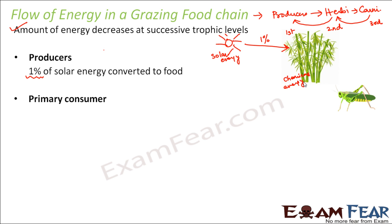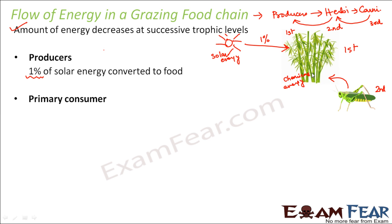Now comes the second trophic level — the herbivores. For example, a grasshopper will eat the plants, meaning it is eating something which contains only 1% of the solar energy. Only 10% of the producer's energy is turned into the grasshopper's body. Some part of the energy is lost as per the second law of thermodynamics during energy conversion. So 10% of the energy stored in the plant gets transferred to the grasshopper.